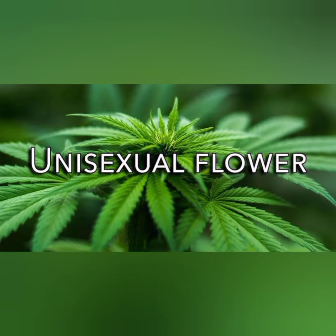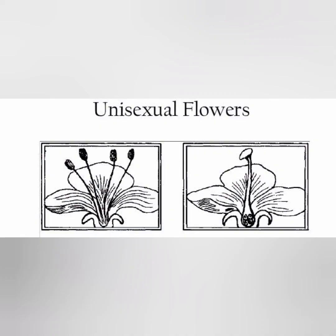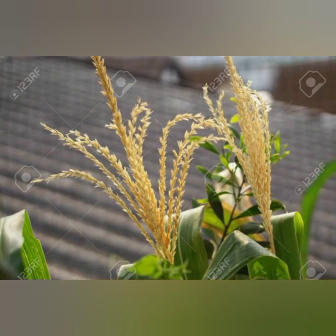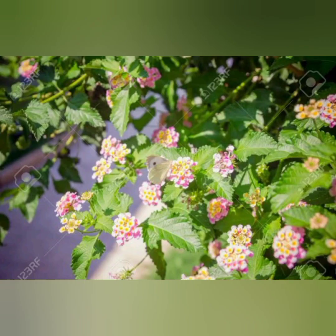Next, unisexual flowers. Some flowers contain only one reproductive organ — either male or female, that is stamen or carpel; any one is present in one flower. They are known as unisexual flowers. Examples: flowers of cucumber, papaya, corn, mulberry, etc.